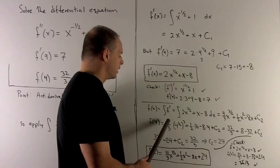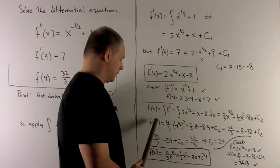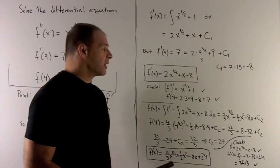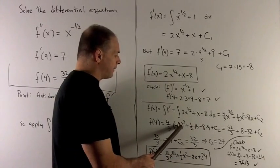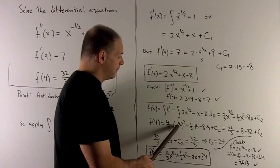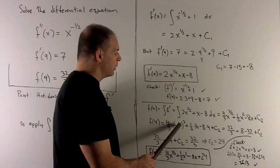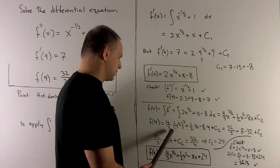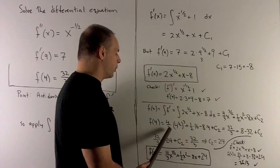So I put 4 in. I have 4 thirds, 4 to the 3 halves. The way I separate that out is to first take the 1 half on the inside, 3 on the outside. So that'll become 4 to the 1 half, which is 2. Cube gives me an 8. So we have 4 thirds times 8, which is 32 over 3.